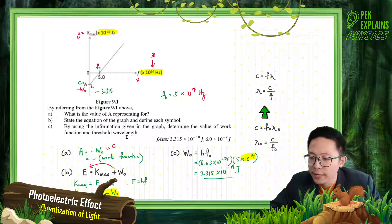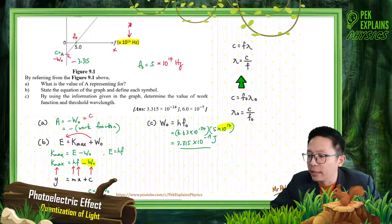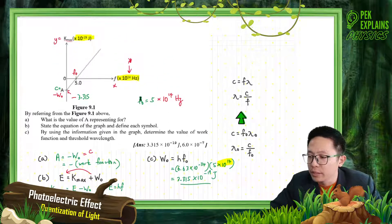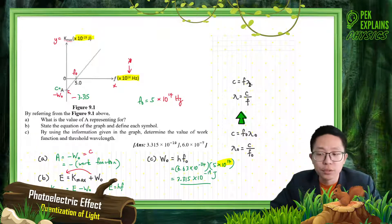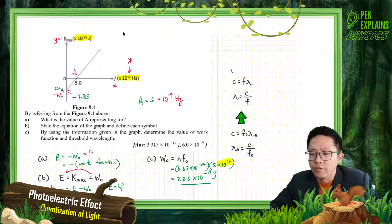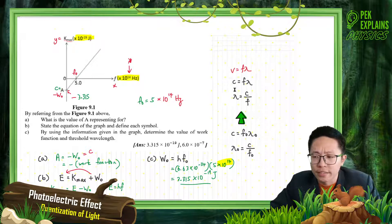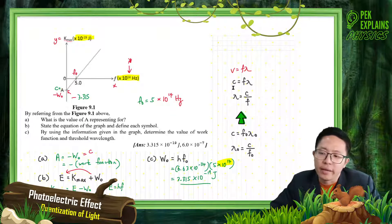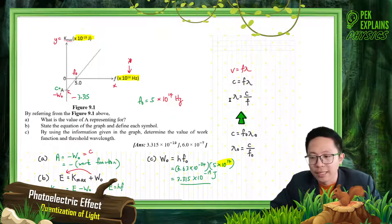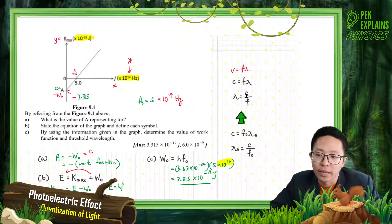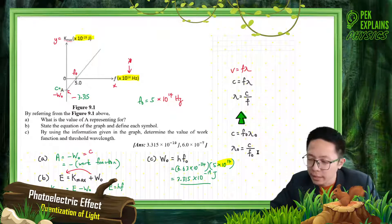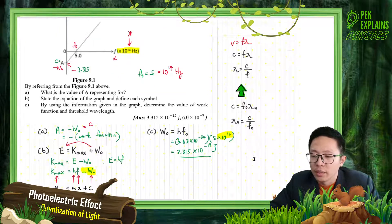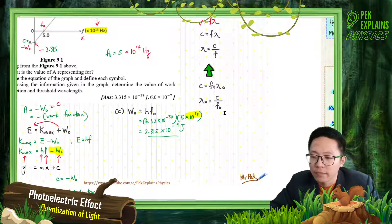Now find the threshold wavelength. Because we have the threshold frequency, we can use the formula C equal to F lambda. This comes from V equal to F lambda, where the speed of light uses the special symbol C — 3 × 10^8. So lambda equals C over F. If we use F naught, then it becomes lambda naught. So threshold wavelength is the speed of light divided by threshold frequency.